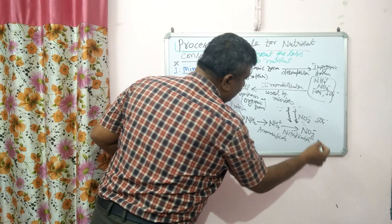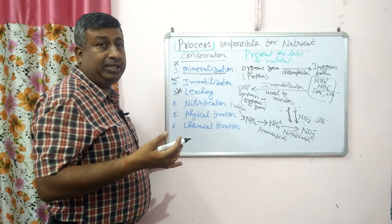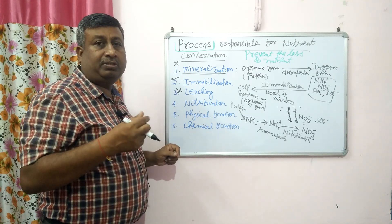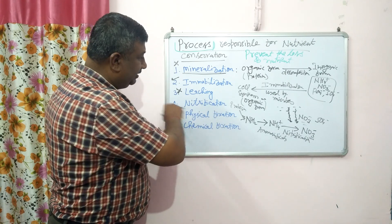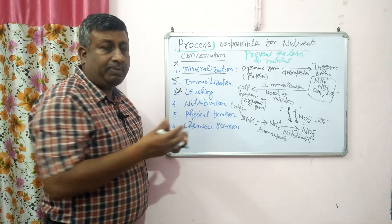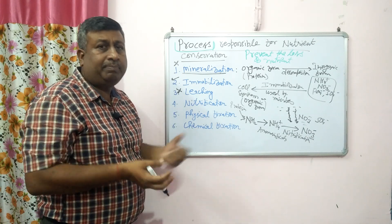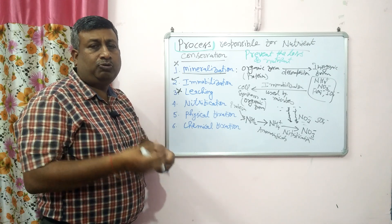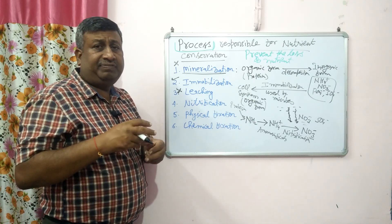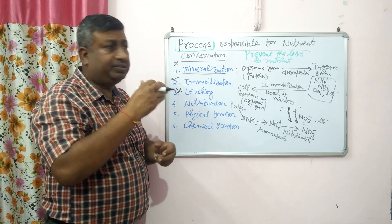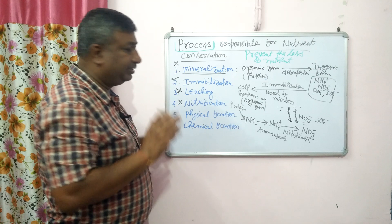This nitrate is then subjected to loss. Leaching loss is very common; if there is anaerobic condition and oxygen deficiency, then nitrate is converted into nitrous oxide gas through denitrification. Therefore, if there is a nitrification process producing nitrate ions, these ions are not conserved — they may be taken up by plants, lost by leaching, or lost by denitrification under waterlogged conditions.